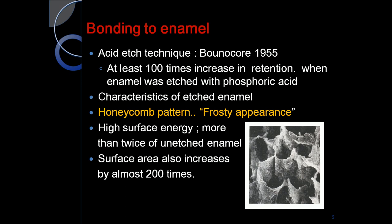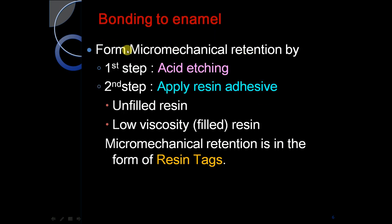The acid etch technique was introduced by Buonocore in the year 1955 — very important. There was at least a 100 times increase in retention when enamel was etched with phosphoric acid. The characteristic of etched enamel was the honeycomb or frosty appearance, which has high surface energy, and the surface area increases by almost 200 times compared to unetched enamel.